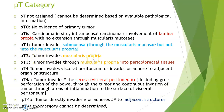T2 — tumor invades muscularis propria. T3 — tumor invades through muscularis propria into pericolorectal tissues. T4 — tumor invades visceral peritoneum (serosa) or invades or adheres to adjacent organs or structures, further divided into T4A and T4B. T4A includes gross perforation of the bowel through the tumor and continuous invasion through areas of inflammation to the surface of visceral peritoneum — when tumor invades through the serosa. T4B is when tumor directly invades or adheres to an adjacent structure.